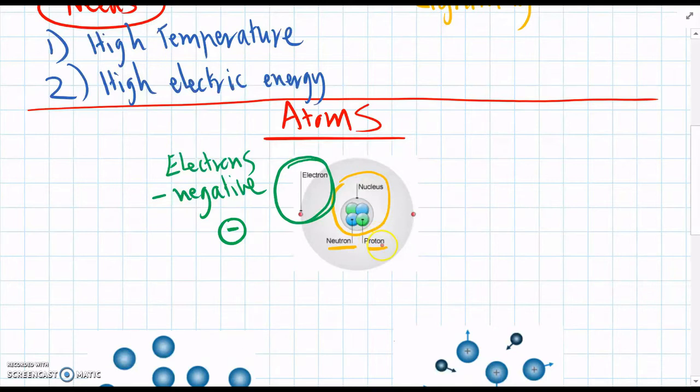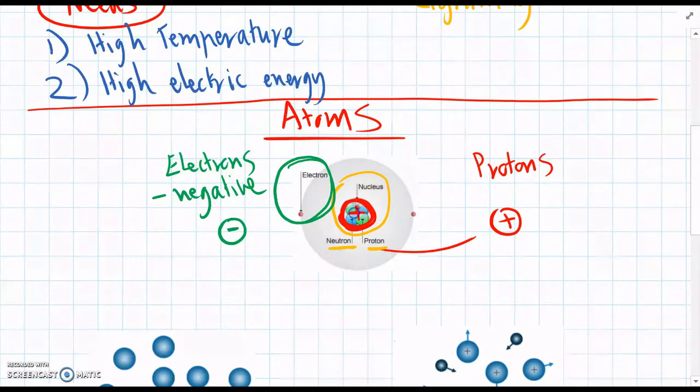Whereas protons, on the other hand, they have a positive charge. So we can see every atom, the middle part, or the nucleus, it has a positive charge overall.